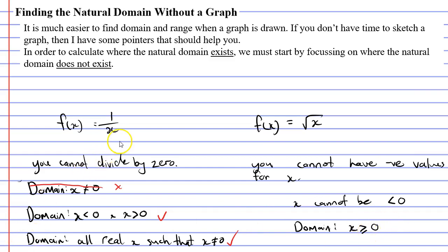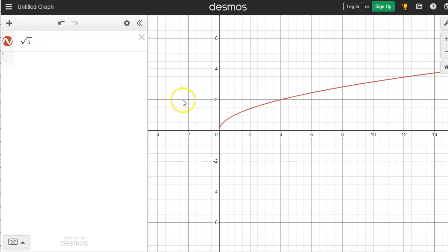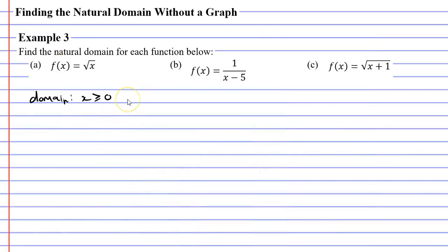Now for the examples — they're either going to be fractions or square roots. Starting with question A: if f(x) equals the square root of x, we know you cannot square root a negative number. So the domain is values of x such that x is greater than or equal to 0. Checking in Desmos, the graph of f(x) = sqrt(x) exists for all values greater than or equal to 0 and doesn't exist for any negative values.